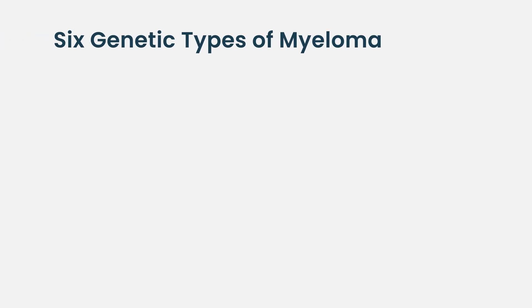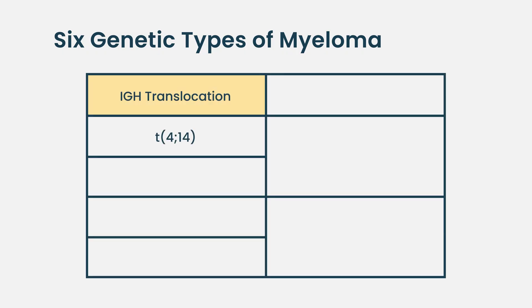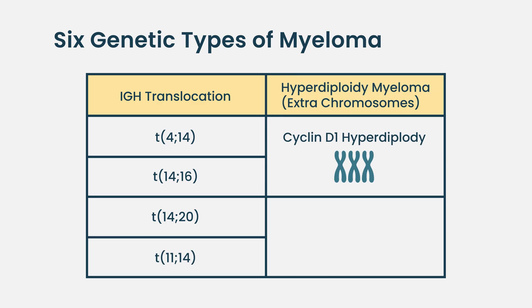What are the main genetic subgroups in myeloma? The study of cell lines by cytogenetics has allowed the broad classification of myeloma into six subtypes: the 4;14, the 14;16, the 14;20, the 11;14, and then cyclin D1-positive hyperdiploid and cyclin D2-positive hyperdiploid — that makes six subtypes.